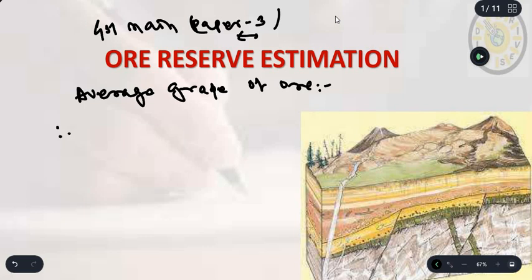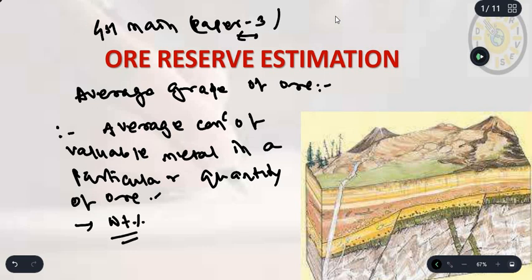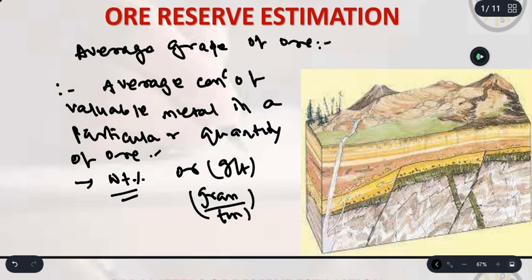What do you mean by average grade? It is nothing but the average concentration of valuable metal in a particular quantity of ore. So it is the average grade. We commonly use weight percentage or gram per ton. Let's discuss some of the parameters that will be helpful for the calculation of the average grade.